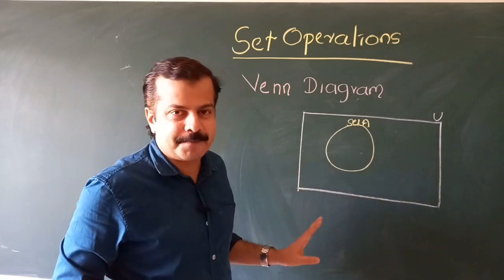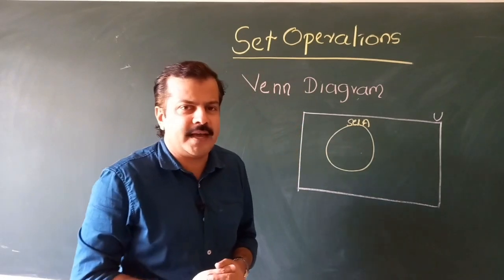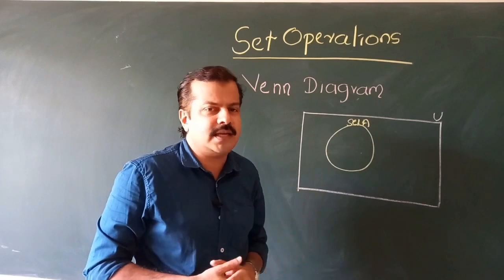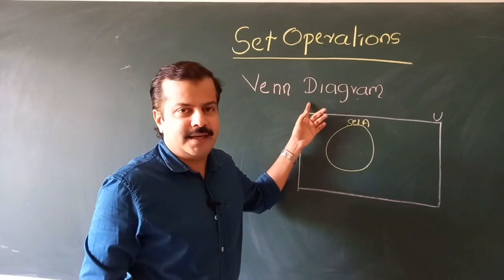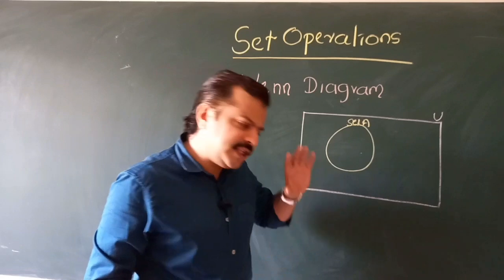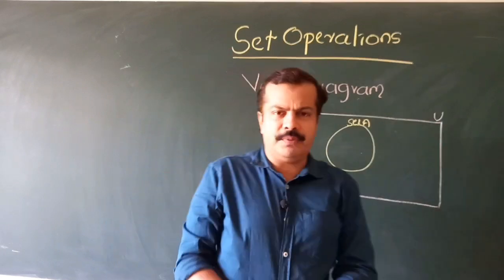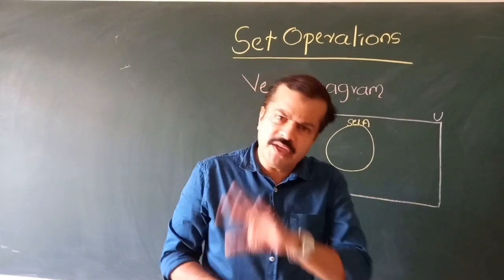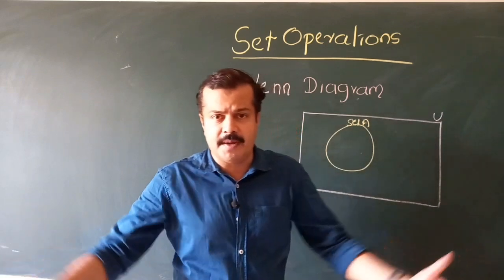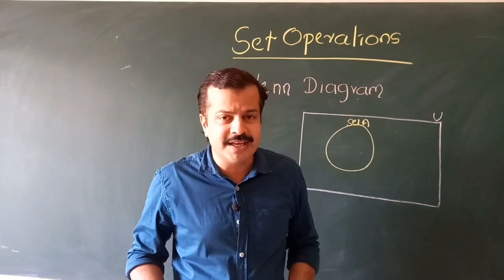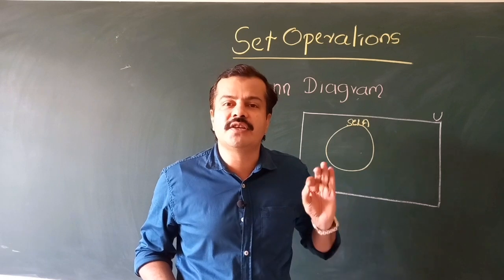We will use the concept of Venn diagrams when we explain each and every set operation. Now let us move towards our important topic: the operations of sets. Sets are different from numbers because the elements of a set can be different from numbers — they can be alphabets or any other objects. From the last class we understood that a set means a collection of definite and well-distinguished objects.